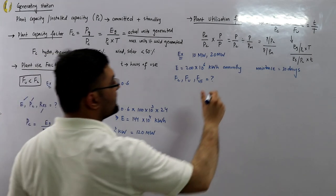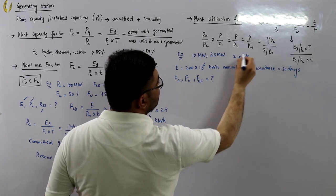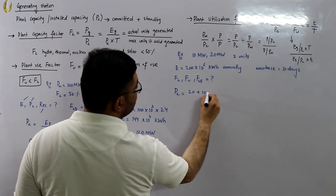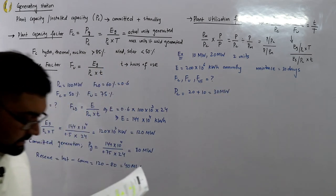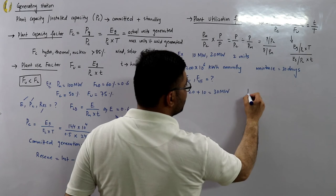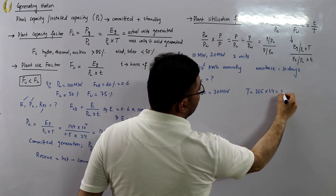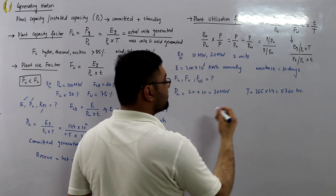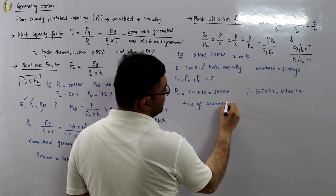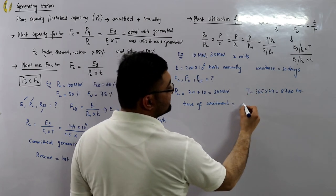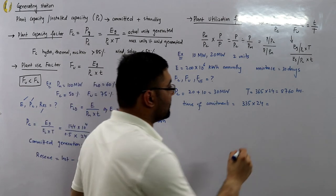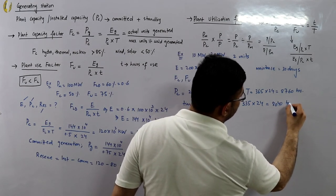The installed capacity PC includes both units: 20 plus 10 equals 30 megawatts. The total time in a year is 365 × 24 = 8,760 hours (capital T). The time of operation (small t) excludes the 30-day maintenance period: (365 − 30) × 24 = 335 × 24 = 8,040 hours.